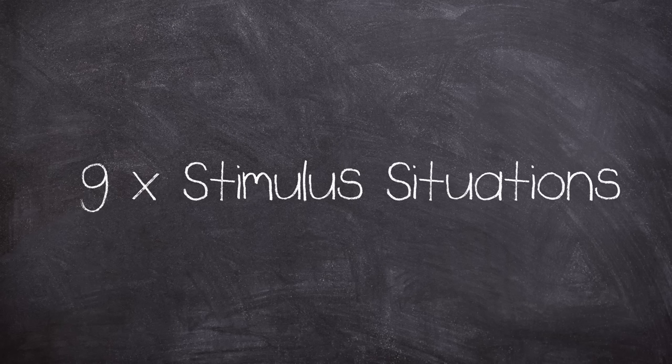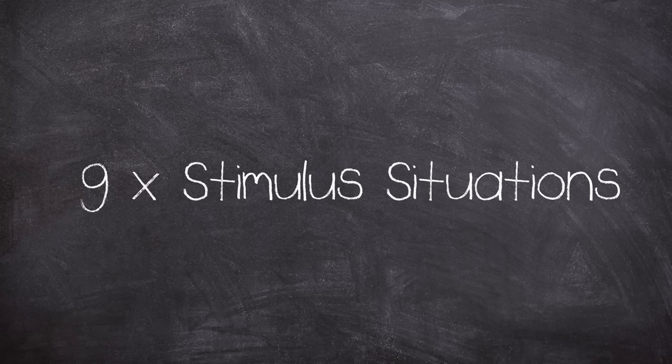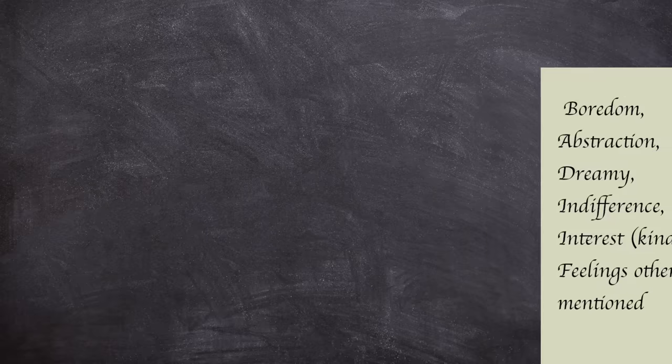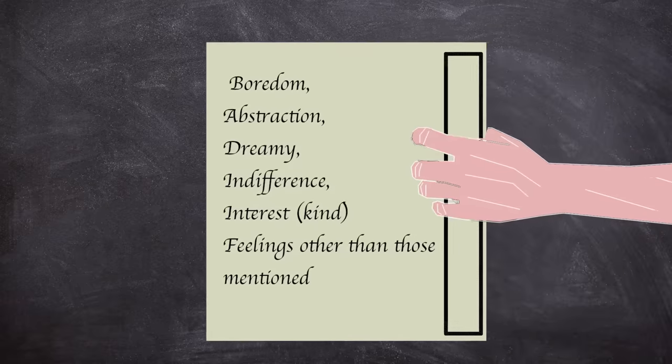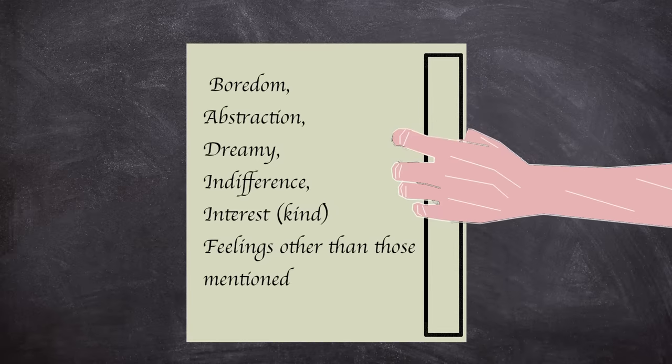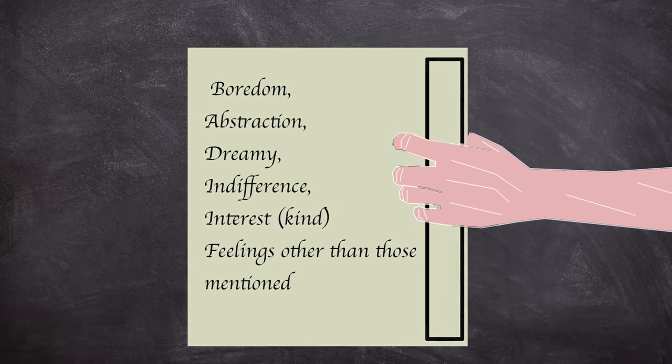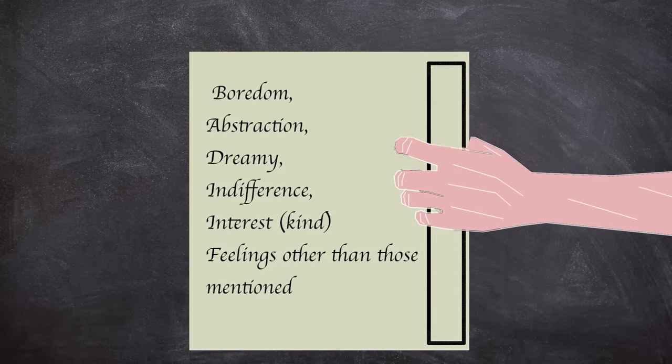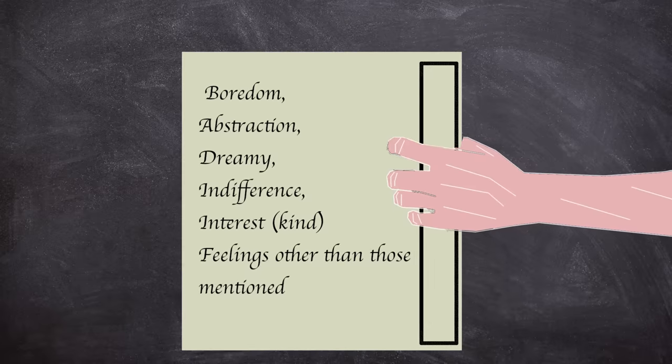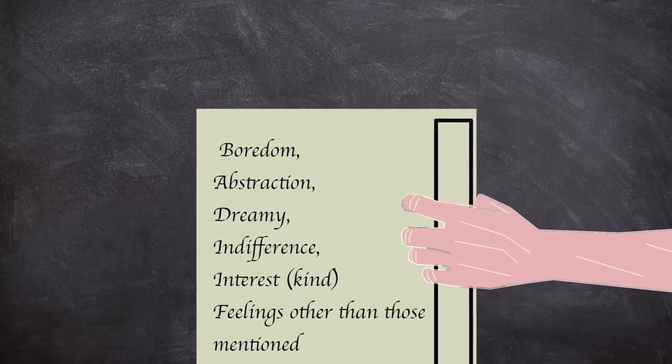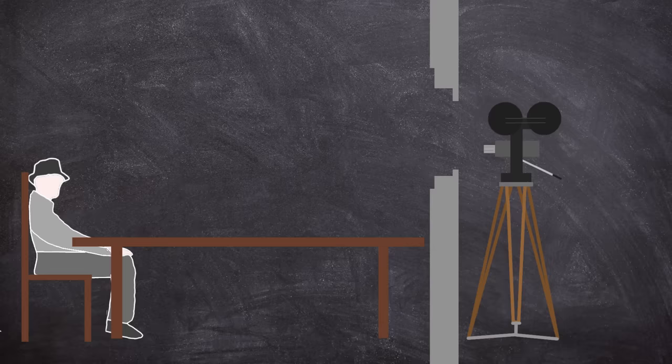Various stimuli from nine categories were presented to each subject, and after each situation, a card was given to the participant with a number of emotions written on it, such as boredom, abstraction, dreamy, indifference, interest, and also a space labeled feelings other than those mentioned. Each situation however would have a slightly different card. The experiment's stimuli started off pretty tame, culminating in a fairly harsh finale.